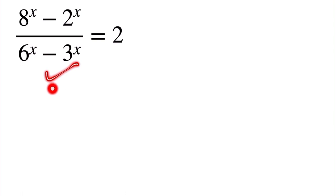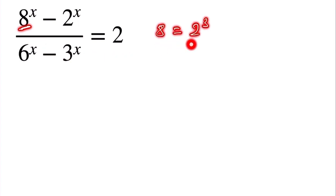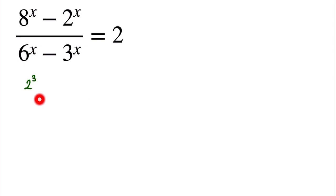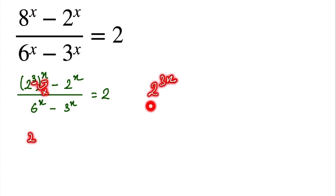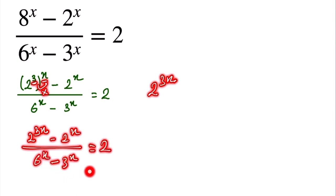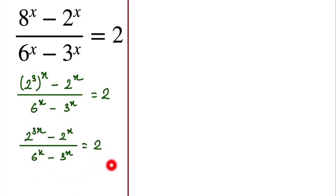So this is our question: 8 to the power x minus 2 to the power x, divided by 6 to the power x minus 3 to the power x, is equal to 2. Here 8 can be written as 2 to the power 3. So 2 to the power 3, the whole raised to x, minus 2 to the power x, divided by 6 to the power x minus 3 to the power x, equals 2. We can multiply the powers, giving 2 to the power 3x minus 2x, divided by 6 to the power x minus 3 to the power x, equals 2.